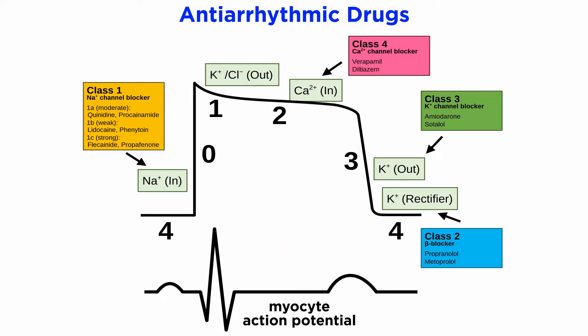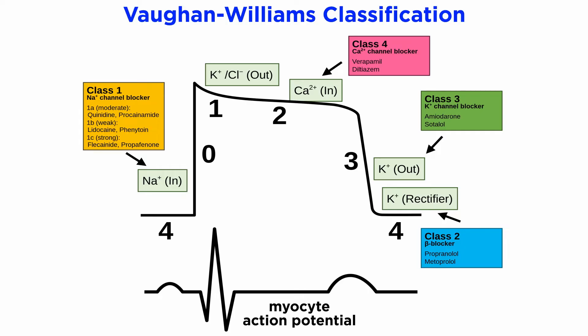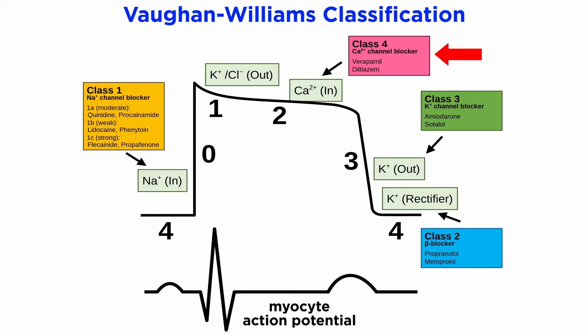Antiarrhythmic drugs work by influencing the SAN and cardiac myocyte action potential through a multitude of mechanisms. These are usually thought of and organized using the Vaughan-Williams classification, which breaks down these drugs into four classes: type 1 sodium channel blockers, type 2 beta blockers or beta-adrenoceptor antagonists, type 3 potassium channel blockers, and type 4 calcium channel blockers.